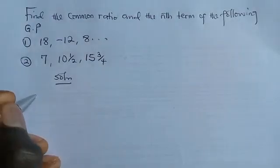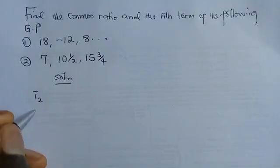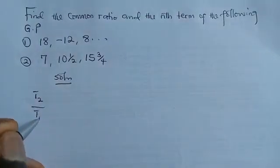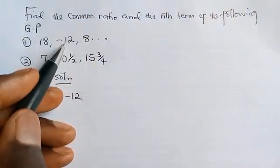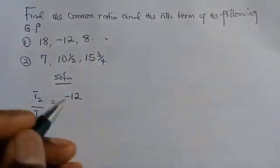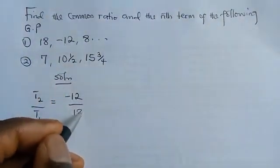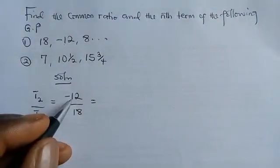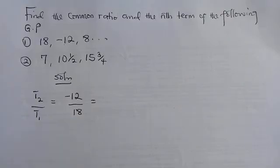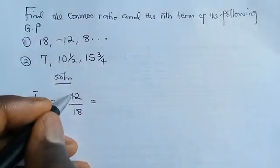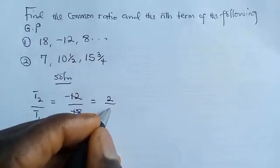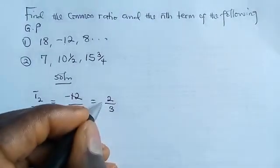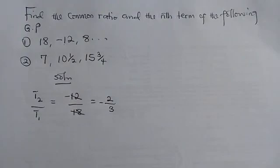So we are going to have T2 divided by T1, and that is going to be minus 12 — that's our second term — divided by 18, our first term. The highest common factor between 12 and 18 is 6. 6 goes into 12 two times, and 6 goes into 18 three times. So the common ratio here is minus 2 over 3.